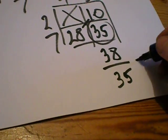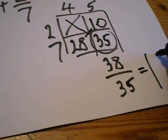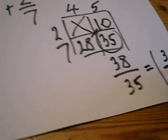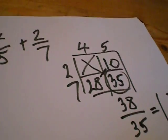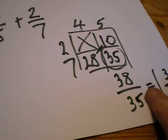If you want we can simplify that, so that's one and three over thirty-five. That's your answer.